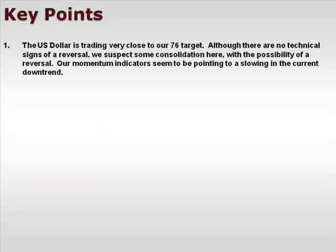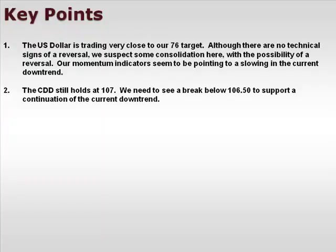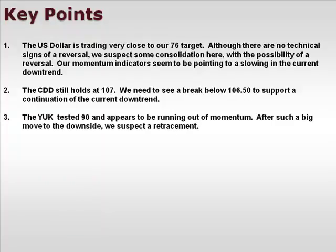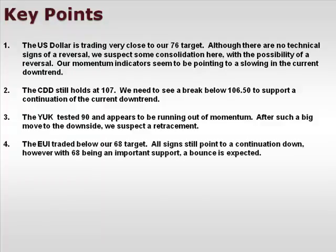Let's review our key points. First, the US Dollar is trading very close to our 76 target — although there are no technical signs of a reversal, we suspect some consolidation with the possibility of a reversal, and our momentum indicators seem to be pointing to a slowing in the current downtrend. The CDD still holds at 107; we need to see a break below 106.5 to support a continuation of the downtrend. The YUK tested 90 and appears to be running out of momentum after such a big move to the downside — we suspect a retracement.